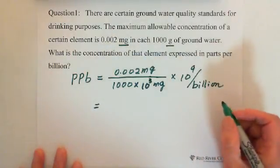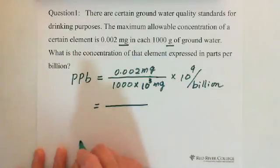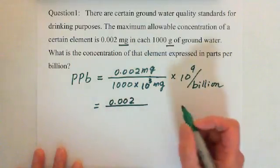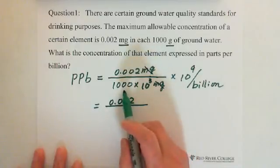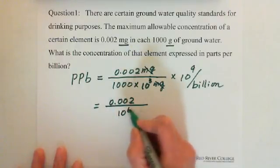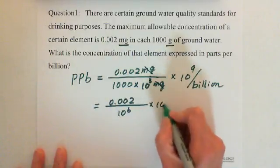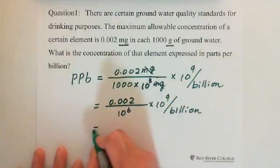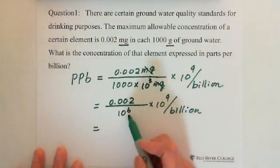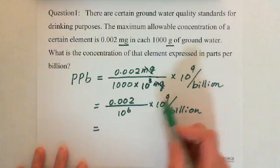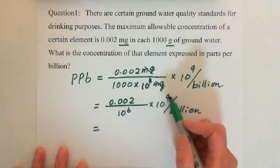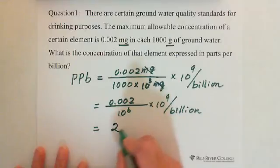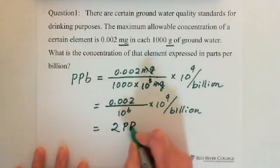So it equals: 0.002 — the milligrams cancel out — so the bottom becomes 10 to the 6th exponent. Then multiplied by 10 to the 9th exponent per billion. We can simplify: the 9th exponent and 6th exponent leave 3 zeros on top. Multiply 0.000002 by 1000, we get 2. So this equals 2 PPB.